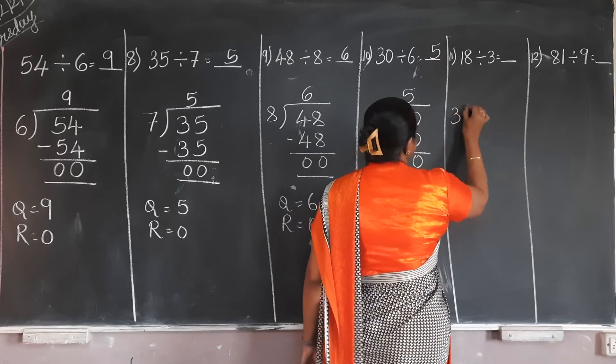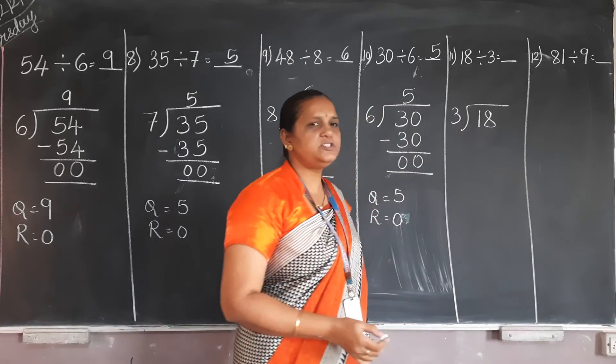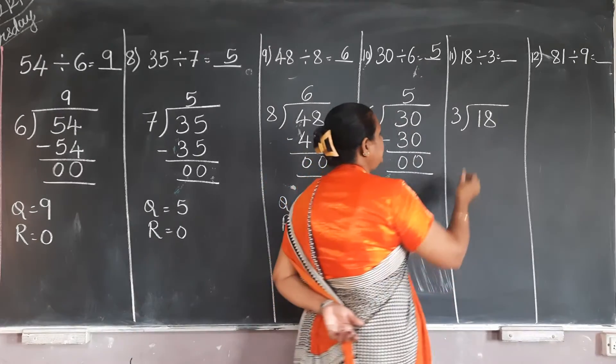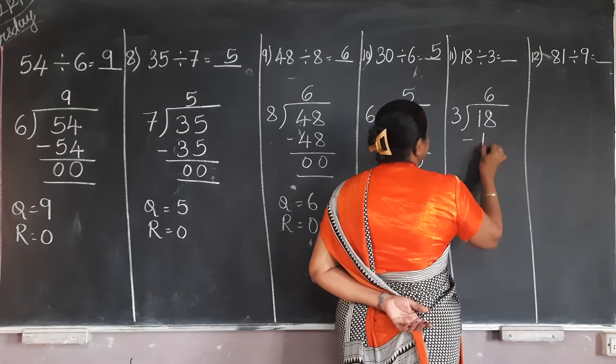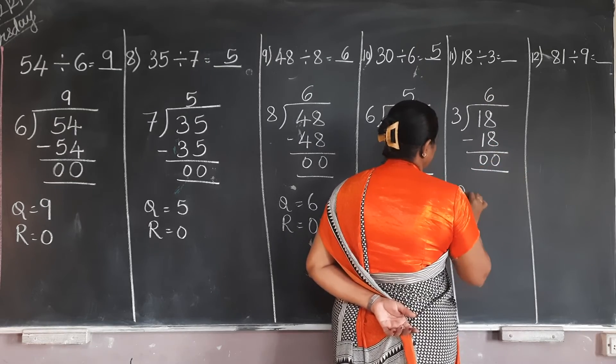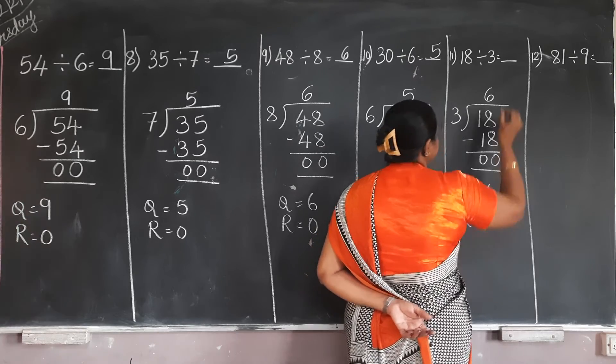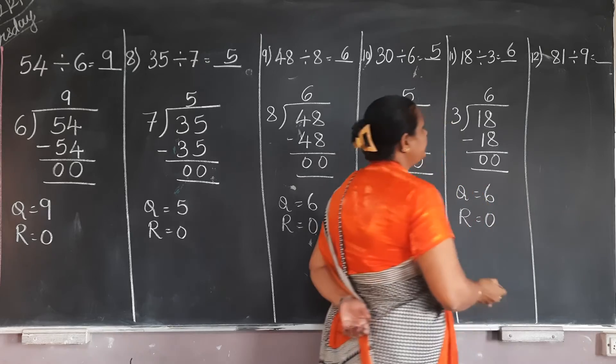Now next one is 18. In 3 table, 18 is in which place? 3, 6 are? 18. Question is 6 and the remainder is 0. Now next one.